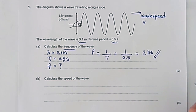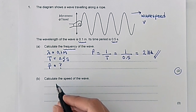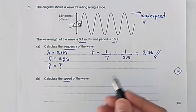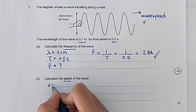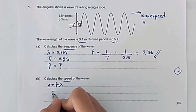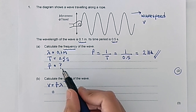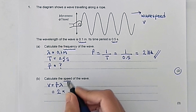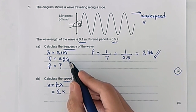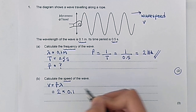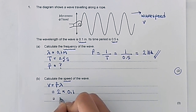Next, we want to calculate the speed of the wave. The wave speed equation, or the wave equation, is v equals f lambda. Substituting the frequency we found in part A into this equation gives us 2 times 0.1, which equals 0.2 meters per second.